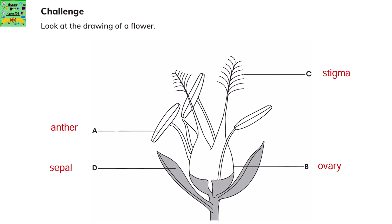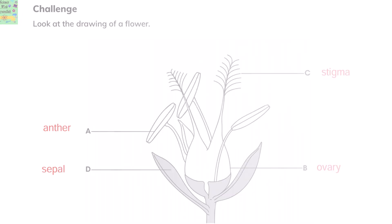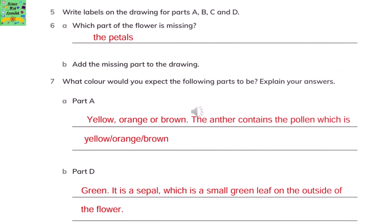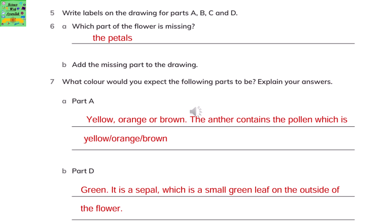Here is the label diagram. Write labels on the drawing for parts A, B, C, and D. Which part of the flower is missing? The petals. Add the missing part to the drawing. Questions 5 and 6 have already been answered through the drawing.